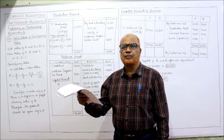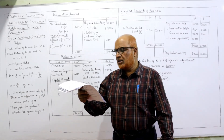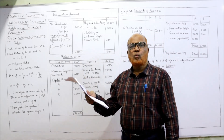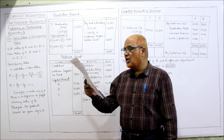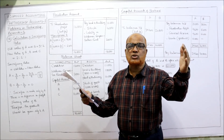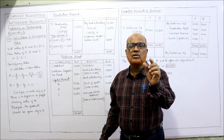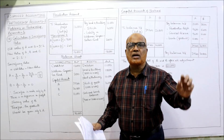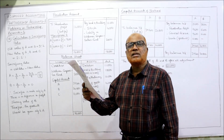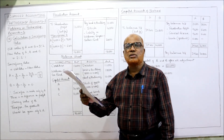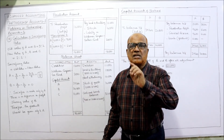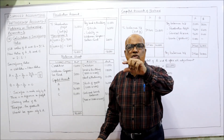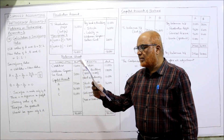A and B shared profits in the proportion of 3:2. The terms of admission are: revaluation of assets — land and building to 18,000. The balance sheet value of land and building is 8,000, so it must be increased by 10,000. Entry: land and building account debit, revaluation account credit. Secondly, stock of goods to 16,000. Balance sheet value of stock is 12,000, so 4,000 rupees stock has to be increased. Entry: stock account debit, revaluation credit.